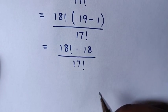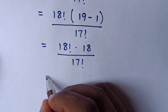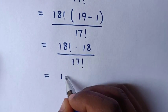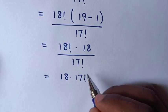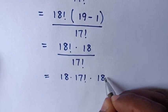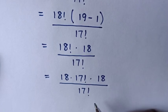Then for this 18 factorial, to have common 17 factorial, this is equal to 18 factorial is 18 times 17 factorial times 18 over this 17 factorial.